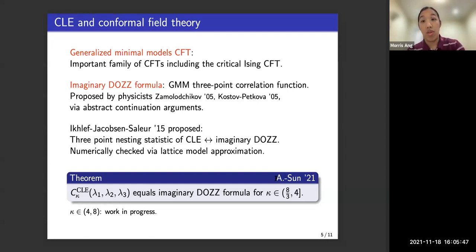So in joint work with Sun Sun, we proved that this is indeed the case. The three-point nesting statistic of CLE indeed agrees with the imaginary DOZZ formula. And this establishes a connection between CLE and the generalized minimal models.